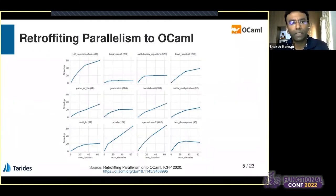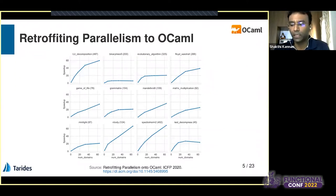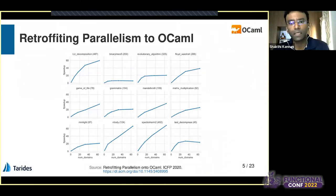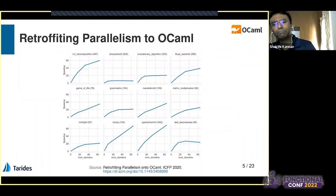The paper 'Retrofitting Parallelism onto OCaml' covers the merge of the parallelism and concurrency implementation with stock OCaml. It is fully available to download online. It includes speedup graphs for some of the benchmarks, very similar to what we saw discussed regarding the Universal Scalability Law in a previous talk.